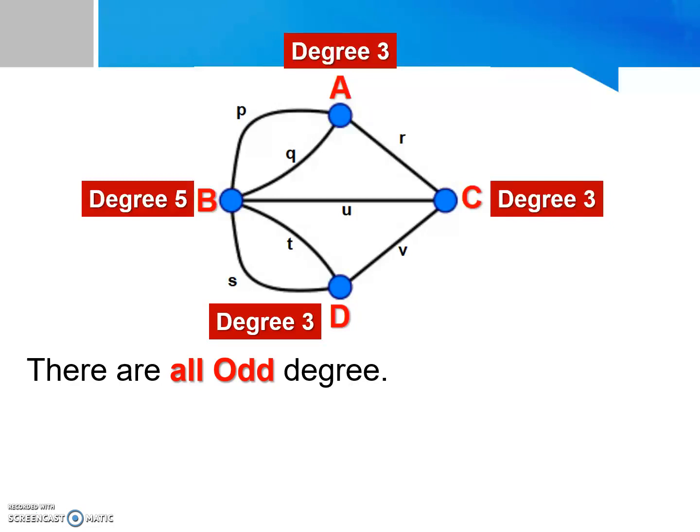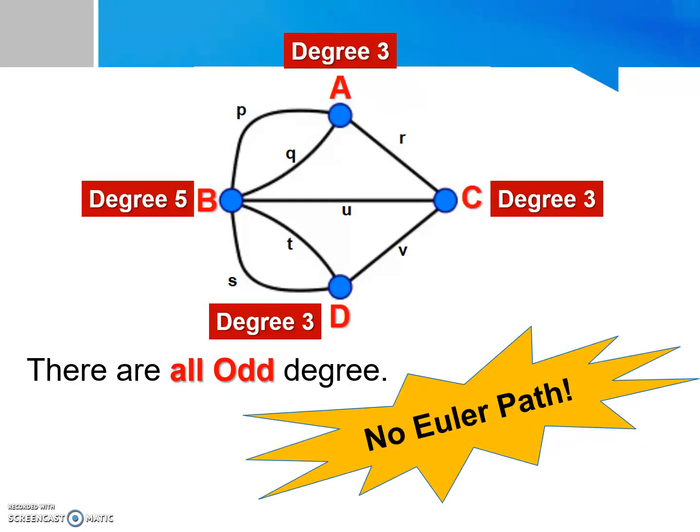So it is actually not an Euler path. Indeed, we cannot draw the lines passing all the edges once without lifting your pencil from the paper. So actually, there is no solution under these conditions.